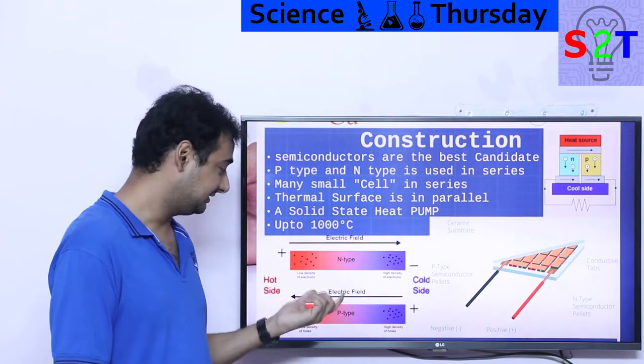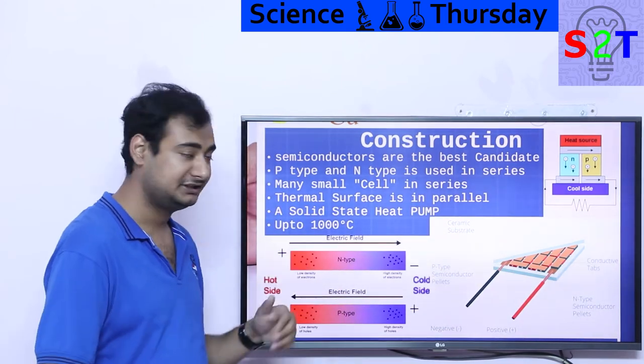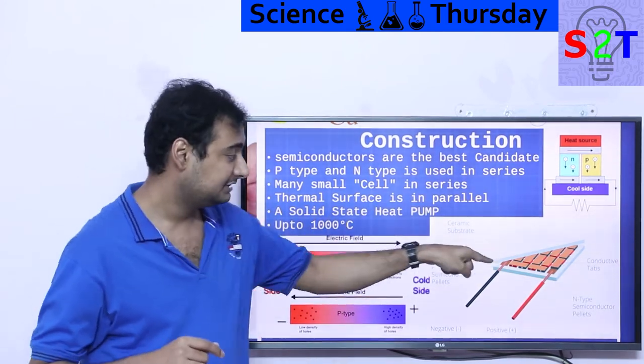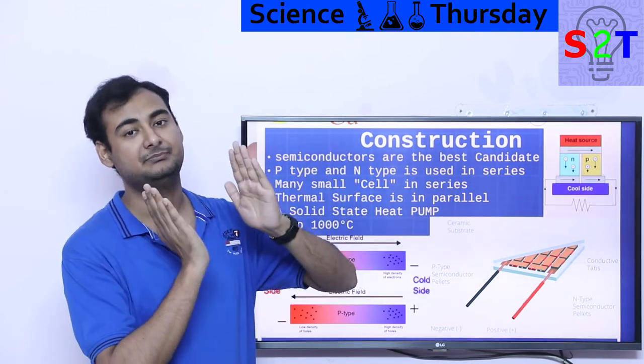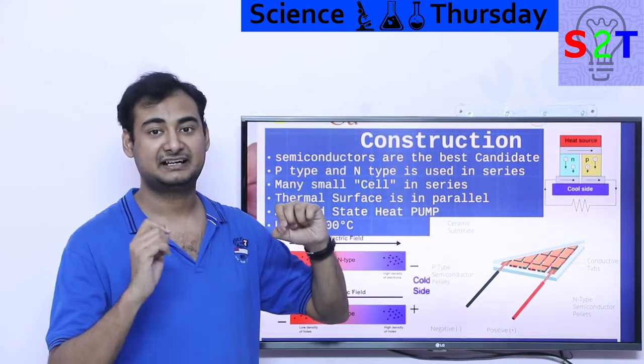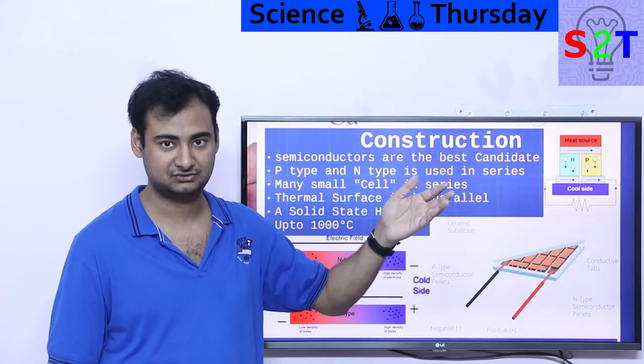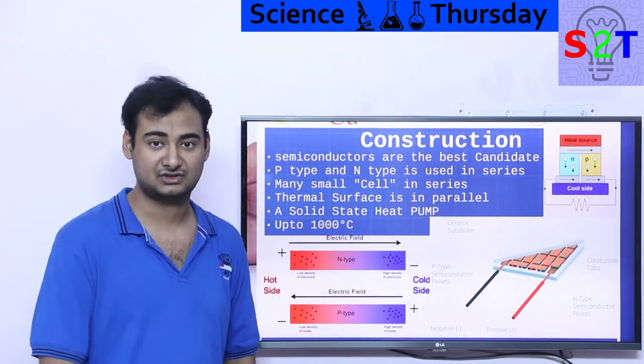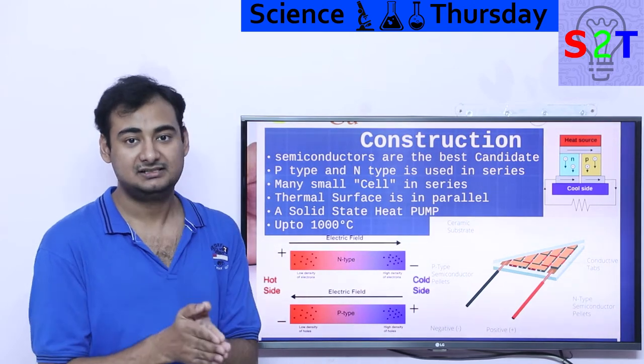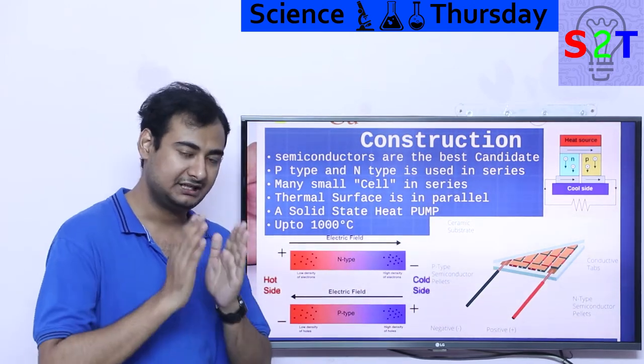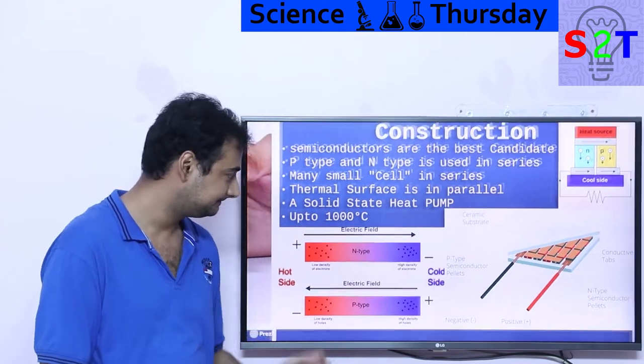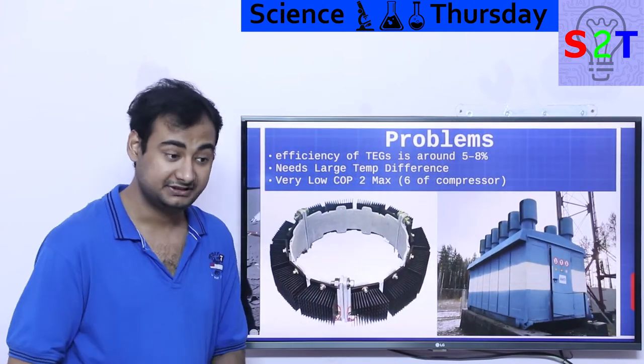So that's the construction of it. You take a unit. Basically you have p-type and n-type and then you create them into cells. However, the cells are arranged in series, but thermally it's insulated in parallel. So the semiconductor is acting as a thermal barrier. It does not allow heat energy from one side to another side to leak. So this is the construction.